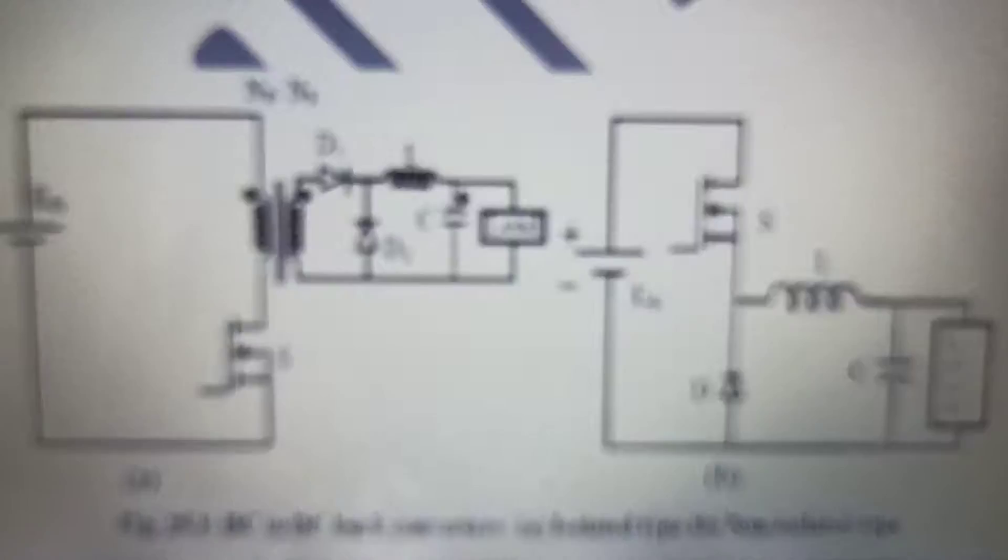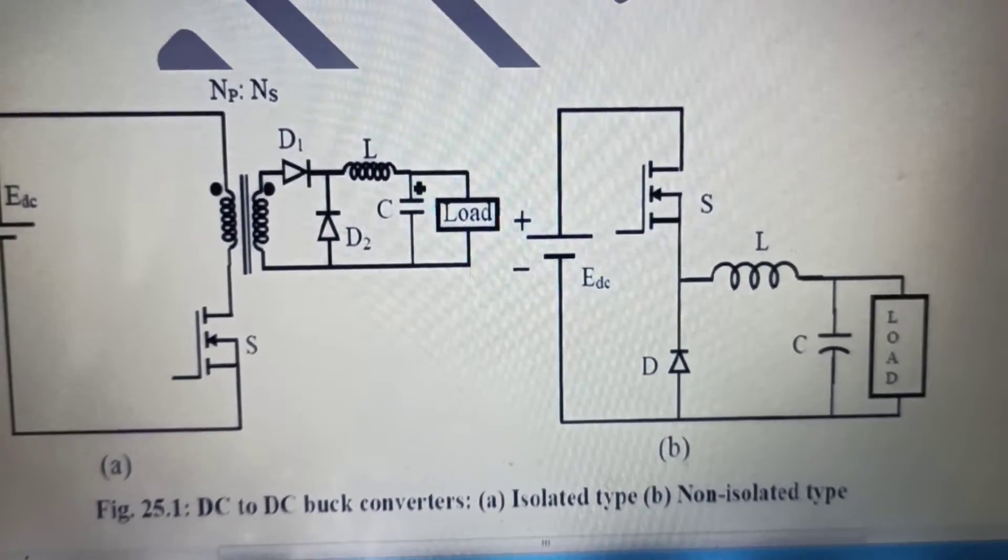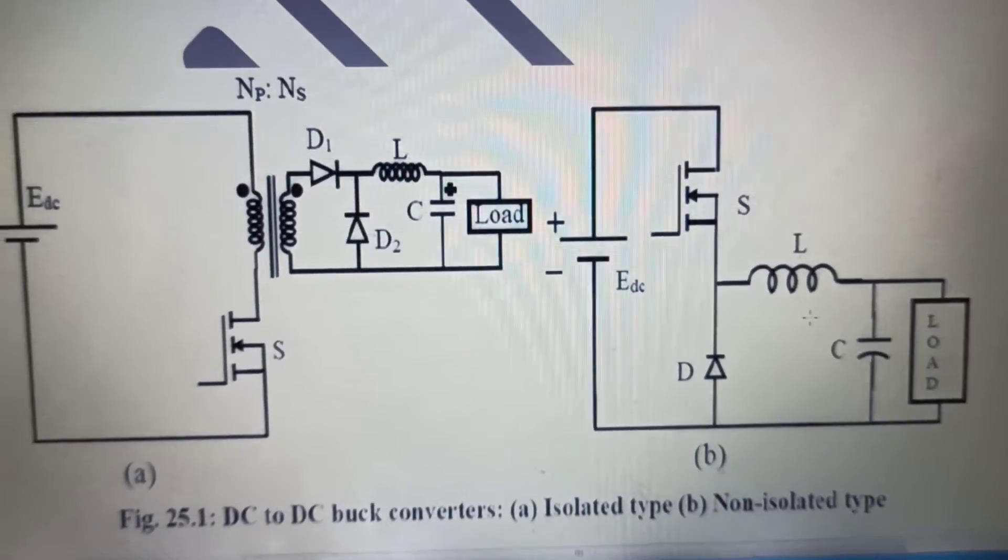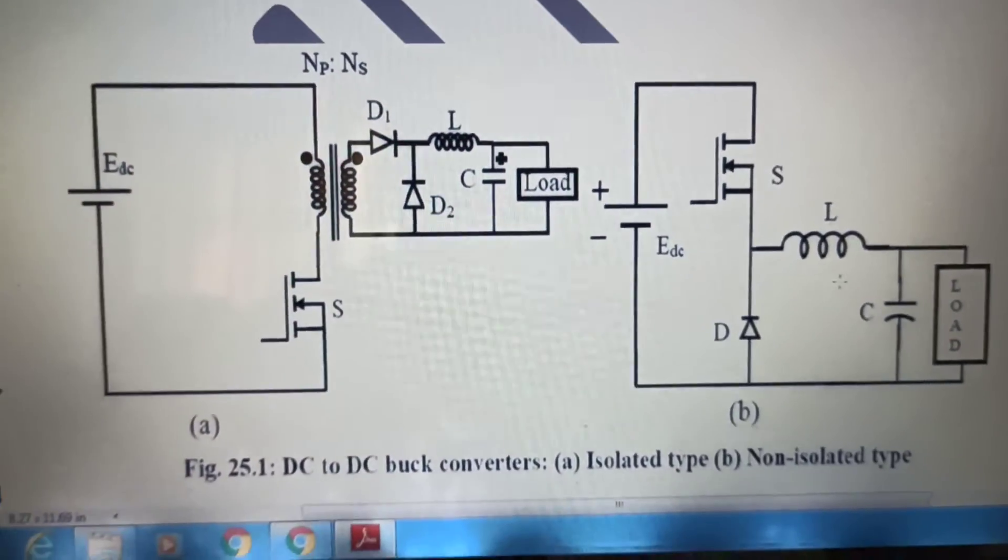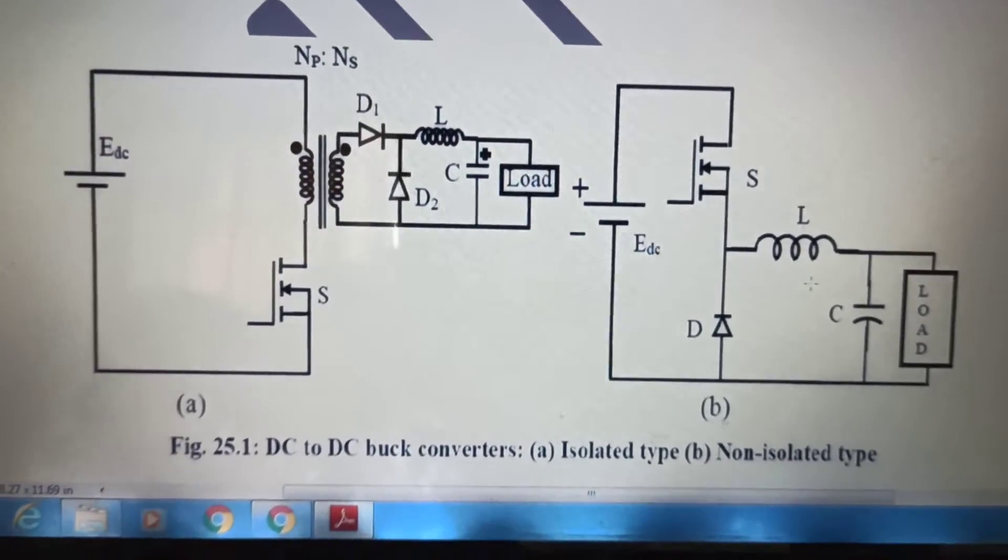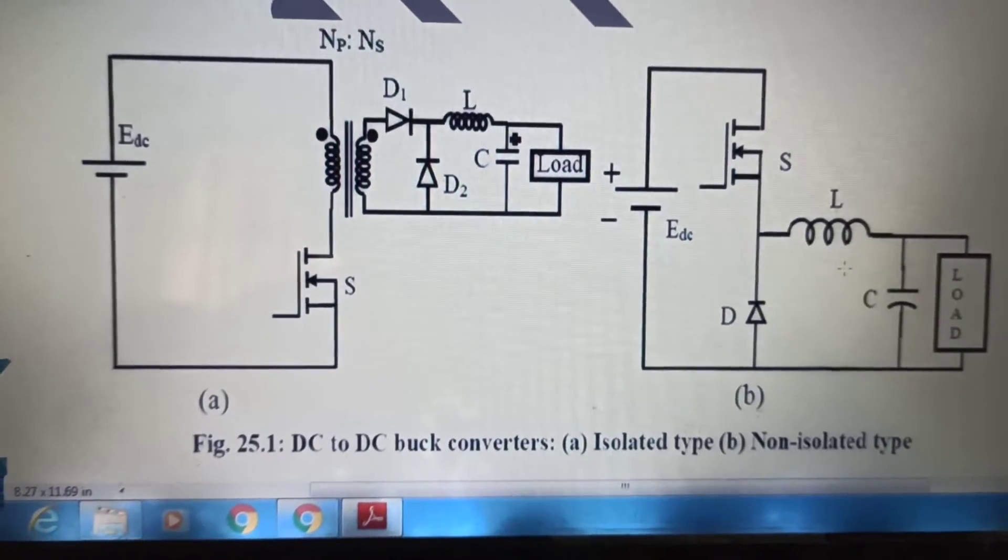This is the power circuit diagram of a buck converter. Two type of buck converters are shown here. First one is the isolated type. Second one is the non-isolated type. Why I am showing this? Because you can easily observe in the isolated type, a transformer is present there.